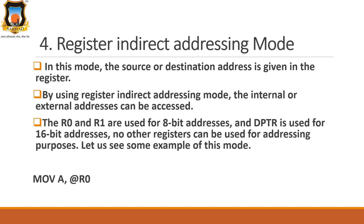The fourth is register indirect addressing mode. In this mode, the source or destination address is given in the register, and by using this address, the internal or external addresses can be accessed. The R0 and R1 registers are used for 8-bit addresses, and DPTR (the data pointer register) is used for 16-bit addresses. No other register is allowed in this addressing mode. For example: MOV A, @R0 — the value inside R0 is considered as an address which holds the data to be transferred to the accumulator.